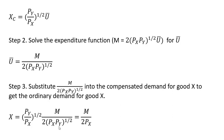Just simplifying here: the price of good y raised to the 1/2 power divided by the price of good y raised to the 1/2 power — the price of good y will disappear from this ordinary demand for good x. Then we have the price of good x raised to the 1/2 power multiplied by 2 times the price of good x raised to the 1/2 power, so that's just going to be 2 times the price of good x in the denominator. And that is our ordinary demand for good x.